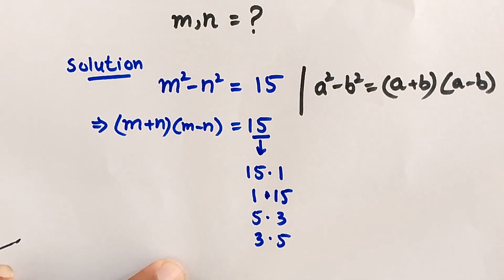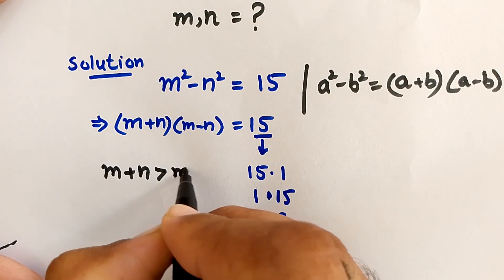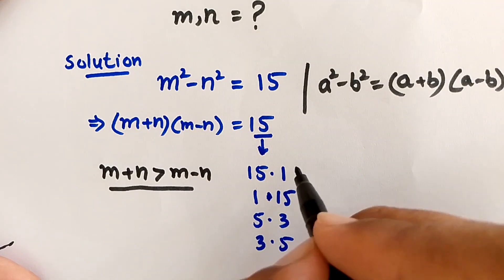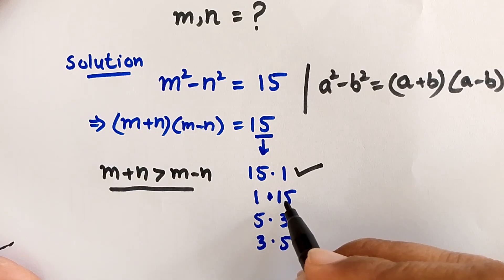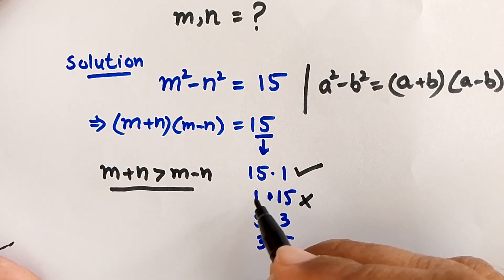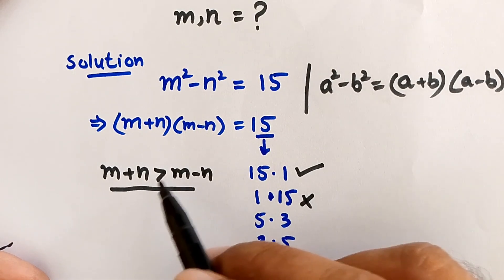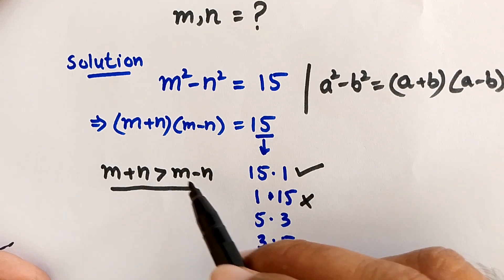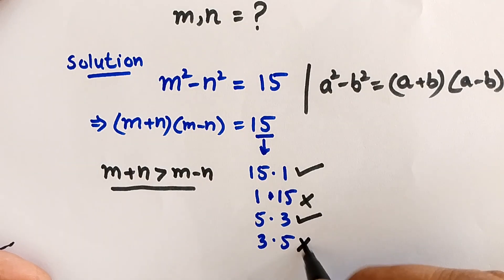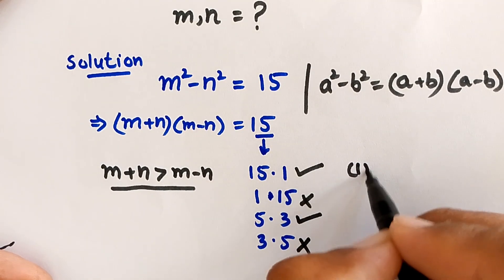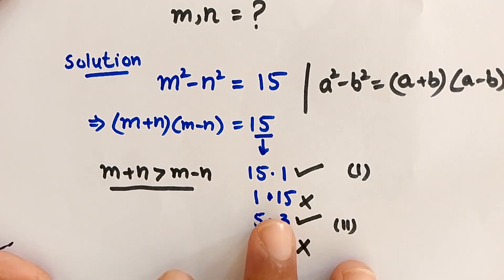We know that m plus n is always greater than m minus n. Applying this condition: case 1 (15×1) is possible because the first factor is greater. Case 2 (1×15) is impossible because the first number is smaller. Case 3 (5×3) is possible. So we have two valid cases to solve.